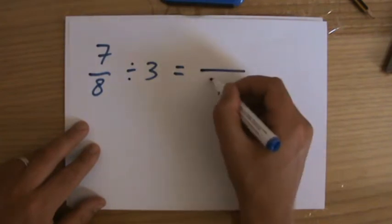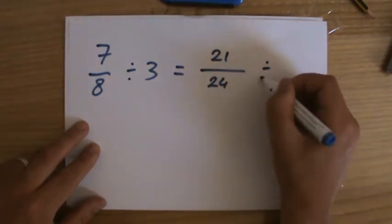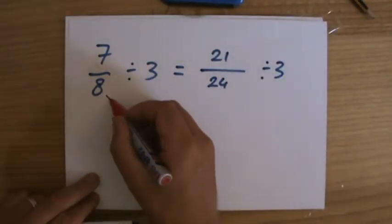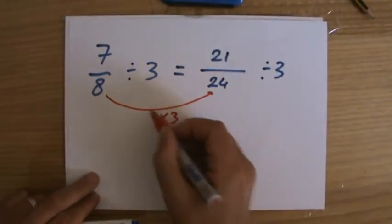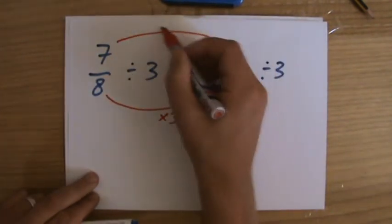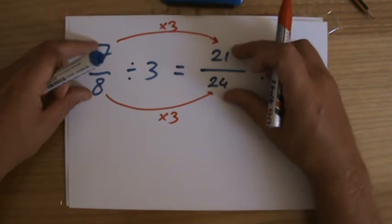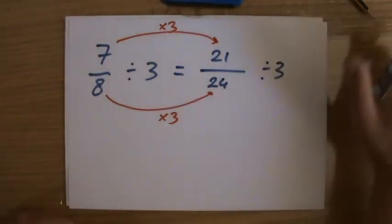So, 24, 21. Do we see what I've just done? I found an equivalent fraction. I multiply that by 3, it's 24. 7 times 3. So, 7 over 8 is equivalent, is equal to 21 over 24.